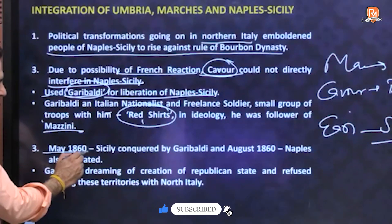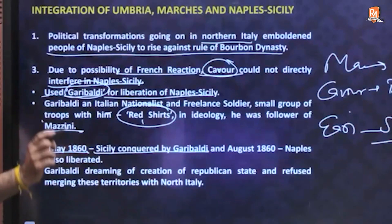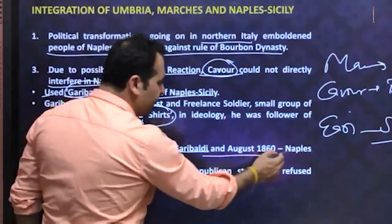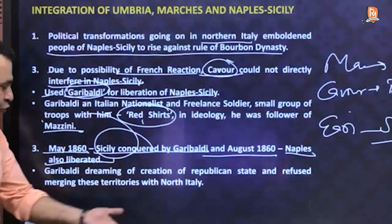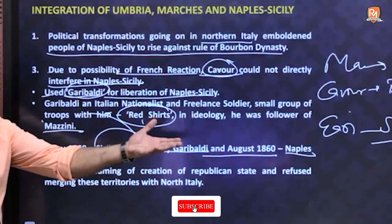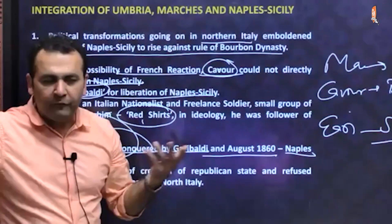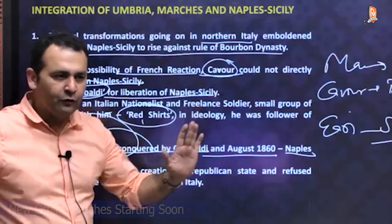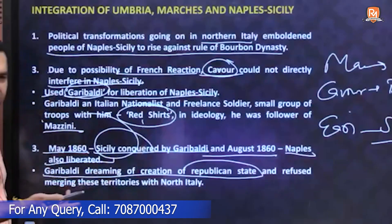Now only Rome — central Italy — was left. Rome was protected by French troops, whom Cavour himself had invited. King Victor Emmanuel waited for the right opportunity. In 1870, France declared war on Prussia, and the French troops protecting the Pope were withdrawn. The moment France withdrew its troops, King Victor Emmanuel seized the opportunity.